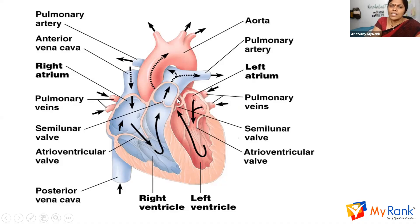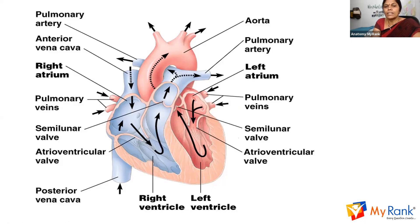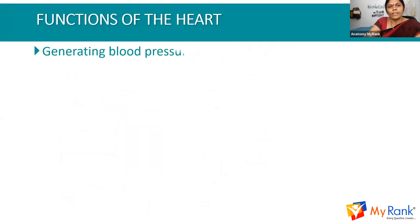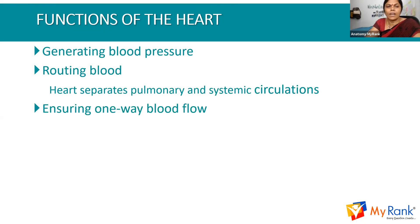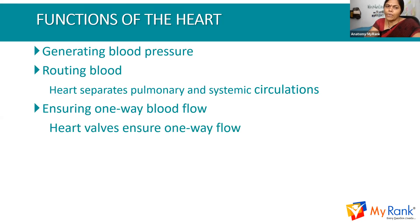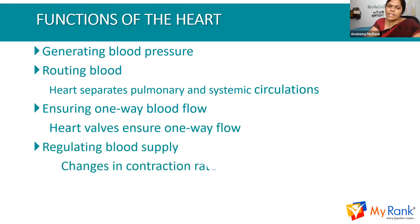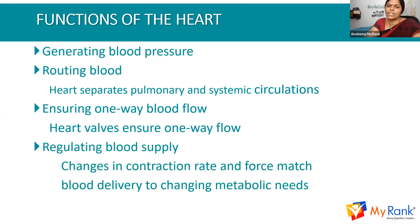The right-sided part of the heart deals with deoxygenated blood, and the left side deals with oxygenated blood. The functions of the heart include: generating blood pressure and routing blood; separating pulmonary and systemic circulation; ensuring one-way blood flow through heart valves; and regulating blood supply — changes in contraction rate and force match blood delivery to changing metabolic needs.